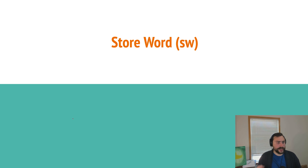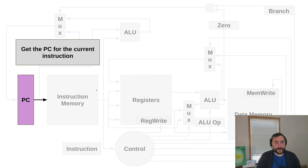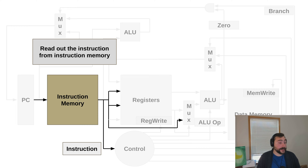Let's start by tracing what the execution of a store word instruction looks like from a high level. Things start at our program counter, which says where we are in a program — and we're at our store word instruction. Starting from the left-hand side, we have our current PC that's pointing to a store word instruction, and from there we access that instruction from our instruction memory.